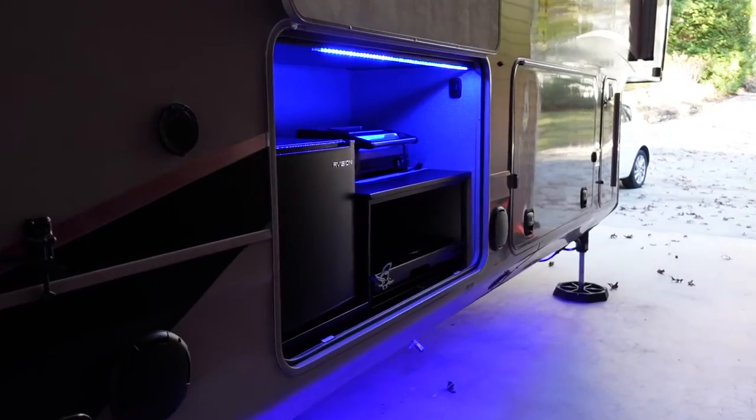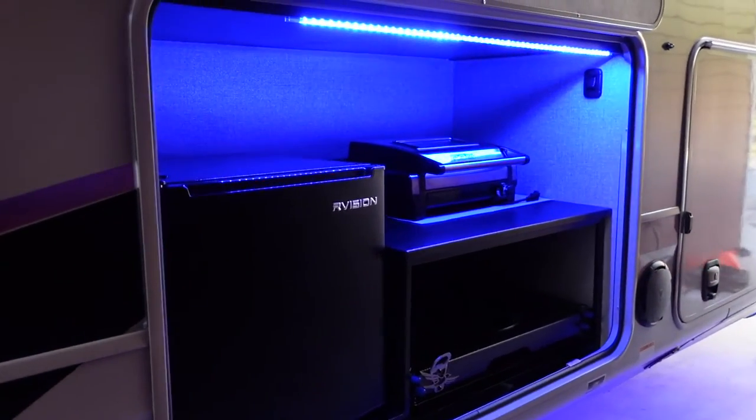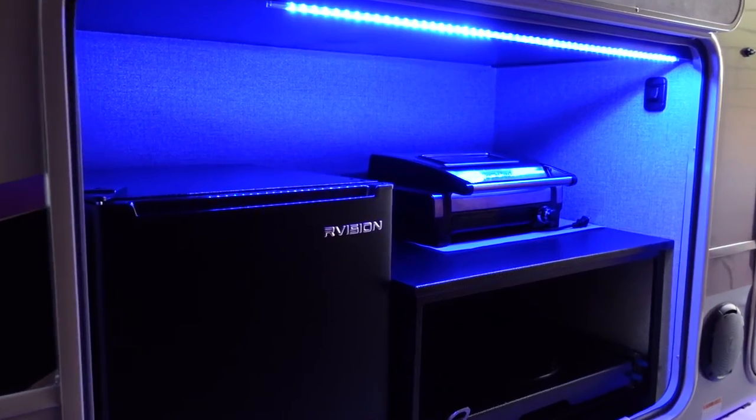In today's video I'm going to share a solution I came up with for my outside kitchen here in my fifth wheel that in my opinion is missing a sink, you know, an outdoor faucet. So this is my Jaco Pinnacle 37 MDQS and I absolutely love how they fit this outdoor kitchen into one of the storage bays on the campsite.